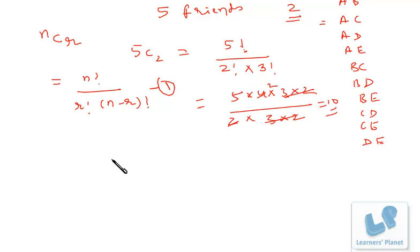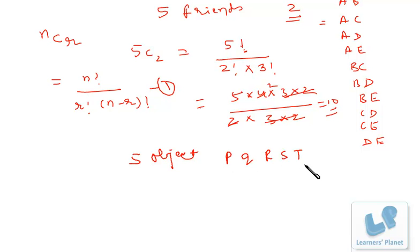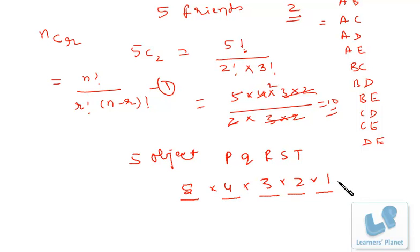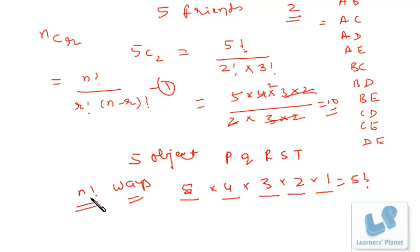Now, if we have to arrange n objects in various ways, how many ways are there? Suppose I have five objects P, Q, R, S, T and I have to arrange them at five places. For the first place I have five choices, for the second place four, then three, then two, then one — that is five factorial, using the principle of counting from our previous session. So n objects can be arranged at n places in n factorial ways.